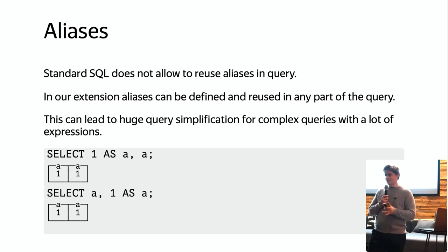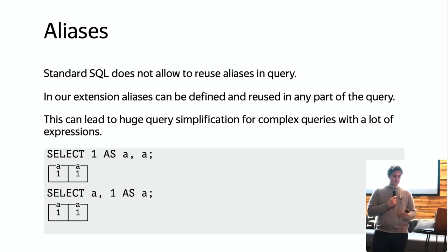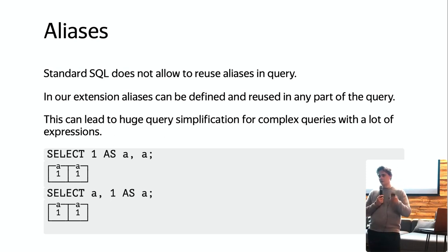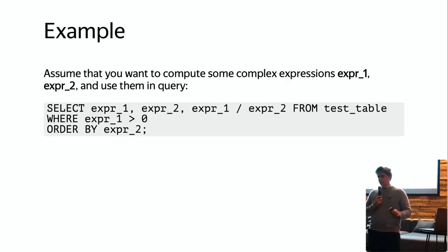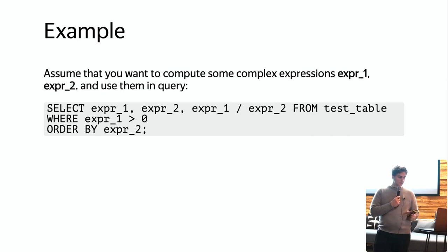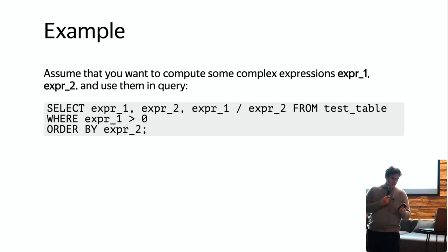Standard SQL does not allow you to reuse aliases in a query. In our extension, aliases can be defined and reused in any part of the query, which can lead to huge query simplification for complex queries with a lot of expressions. On the slide you can see that you can first define alias `a` and then use it, or you can first use the alias and then define it somewhere else in the query. Assume you want to compute some complex expressions and use them in SELECT, WHERE, and ORDER BY.